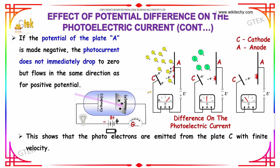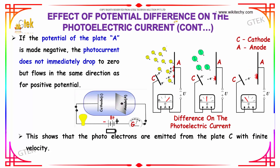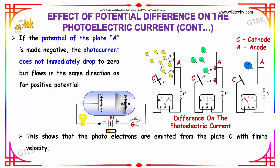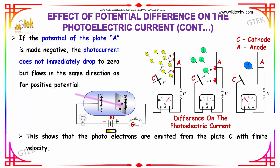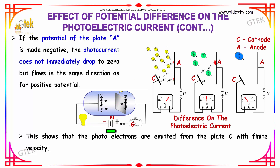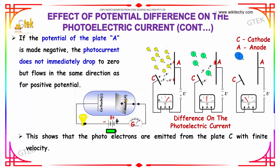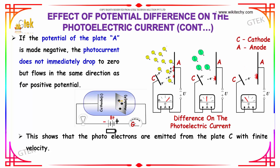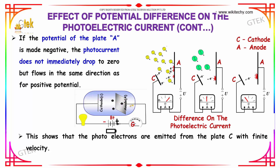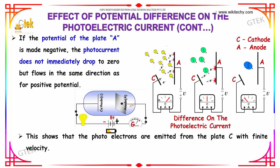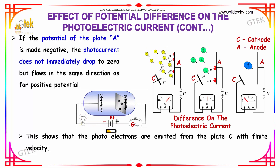If the potential of plate A is made negative, the photocurrent does not immediately drop to zero, but flows in the same direction as for positive potential. This shows that the photoelectrons emitted from plate C have a finite velocity.